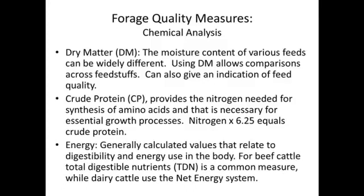Energy is typically a calculated value that relates to digestibility and energy use in the body. It tells us a little bit about how we expect that feed to perform with our livestock. For beef cattle, we use a term called total digestible nutrients, or TDN. While in dairy cattle, the net energy system — typically measured in millicalories per pound — is more common.